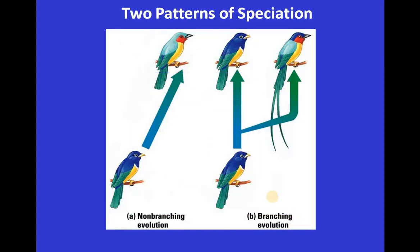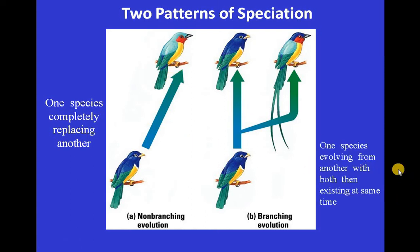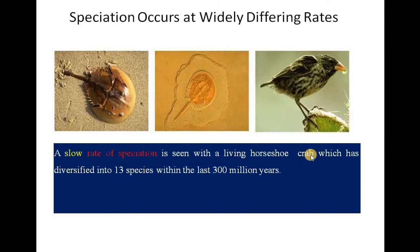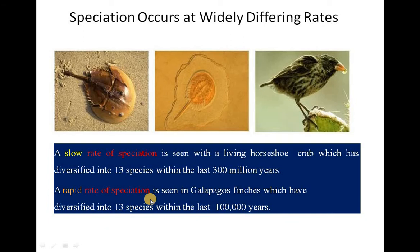In the diagram we see two patterns: non-branching evolution, where one species completely replaces another, and branching evolution, where one species evolves from another with both existing at the same time. Speciation can occur at different rates: a slow rate is seen in the horseshoe crab, which has diversified into 13 species within the last 300 million years, while a rapid rate is seen in Galapagos finches, which diversified into 13 species within the last 100,000 years.